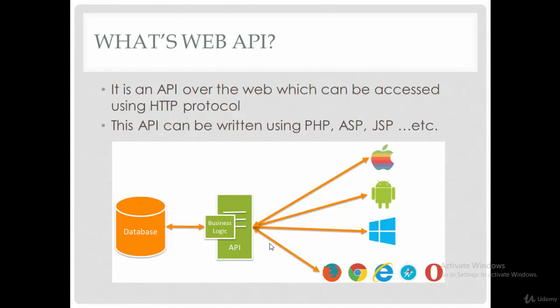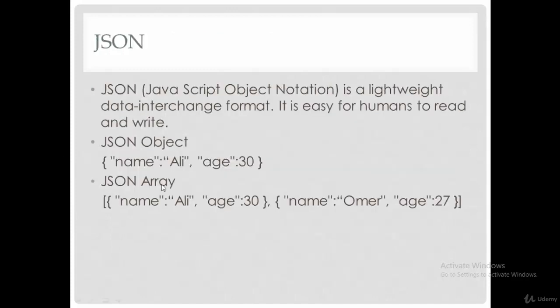There is a special format that the Android app can read. This format is called JSON. JSON, or JavaScript Object Notation, is a lightweight data interchange format. JSON can be divided into JSON object and JSON array.